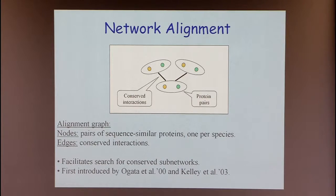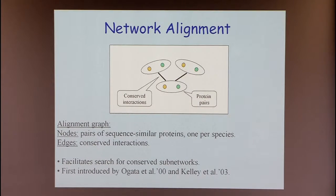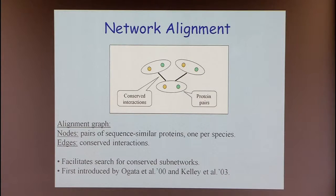One data structure used extensively is the network alignment graph — a combined graph of both networks that facilitates identification of conserved sub-networks. Each vertex corresponds to two proteins, one from each species, that are sequence similar. Sequence similarity requires a threshold, and you include vertices only if the sequences are similar enough.